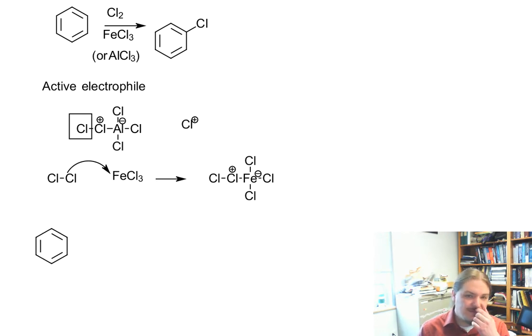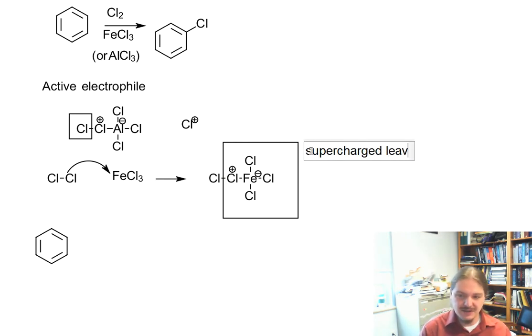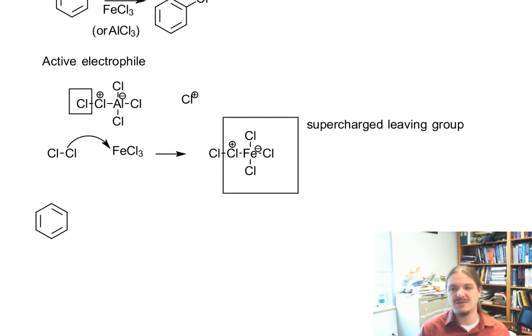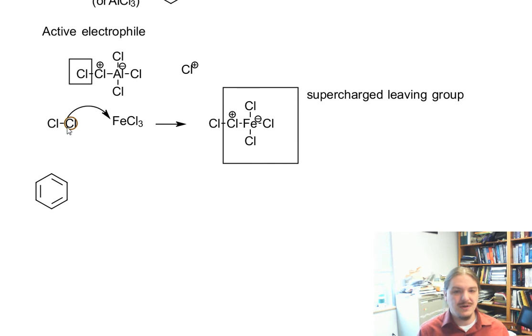So what we've essentially done is taken what was a good leaving group, Cl minus, and made it a supercharged leaving group. And we've done similar things in the reactions of alcohols and other functional groups. So while chlorine is a good leaving group on its own, now I have this supercharged leaving group thing.